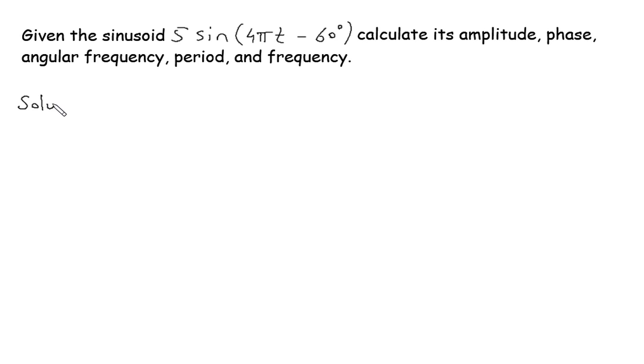Solution: Let's say V(t) is equal to 5 sin(4πt - 60°).